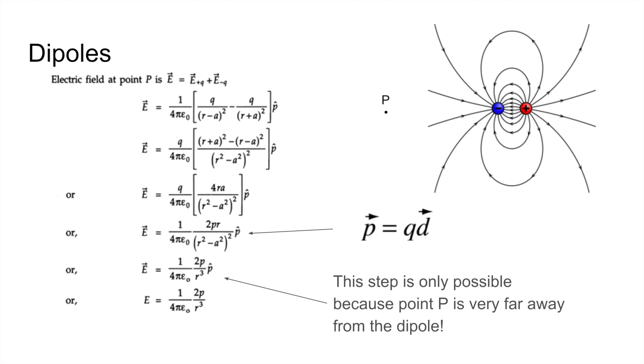And the second to last step, because we're assuming that point P is very far away from the dipole compared to the separation distance, since the two charges are assumed to be very close to each other. So if we look at the r² - a² term given in the third to last step, since a is really small compared to r, it just basically simplifies to r², and then we can simplify and get simpler equations.